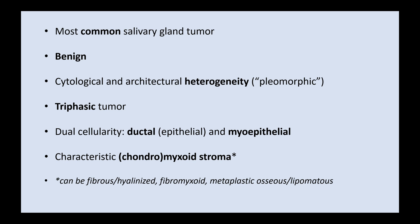Pleomorphic adenoma is best regarded as a triphasic tumor consisting of a dual cell population of ductal (epithelial) and myoepithelial cells, plus a stromal component. The stroma is characteristically chondromyxoid in nature, but may also be fibrous, fibromyxoid, hyalinized, or even metaplastic with bone formation and adipose tissue.